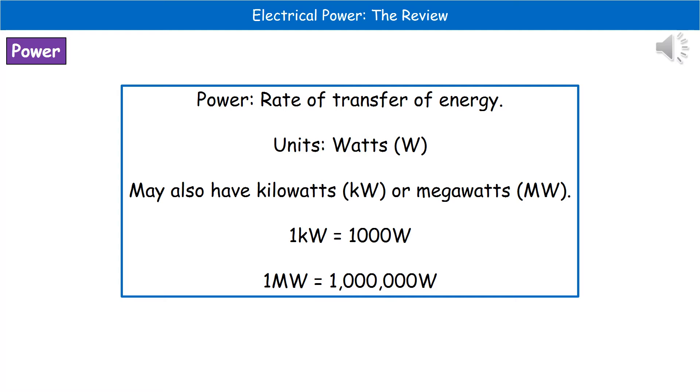When we're talking about power in physics, we're referring to the rate of transfer of energy. It's given the unit of watts, which has the symbol of a capital W.